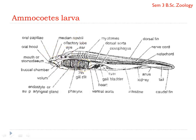The pharynx is ciliated and perforated by seven pairs of gill slits. Gill pouches are eight pairs in number on either side of the pharyngeal region. The first pair of gill pouches are poorly developed. They open directly into the pharynx. A separate respiratory tube distinct from the esophagus is absent. The pharynx is provided with an endostyle, the epipharyngeal groove, and the peripharyngeal band.